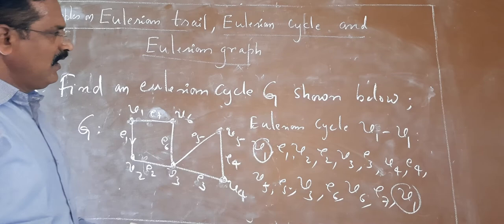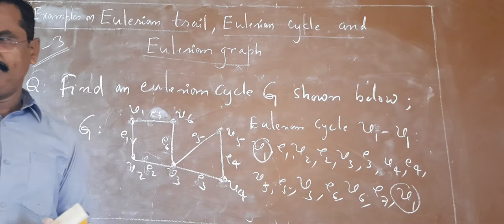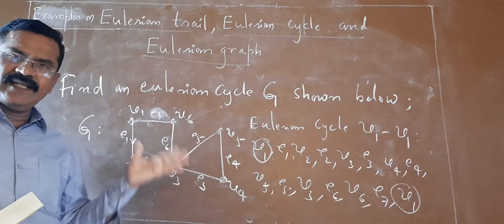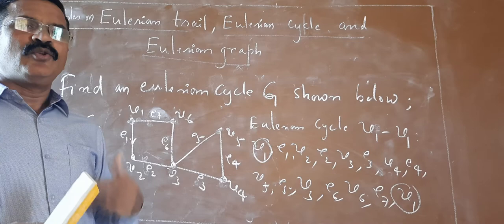These are the few examples considered in this class. As I said, if you observe properly, there will be one characteristic for an Eulerian graph and one characteristic for an Eulerian trail. Those are going to be discussed in the coming sessions. With this, we conclude this lecture. Thank you.